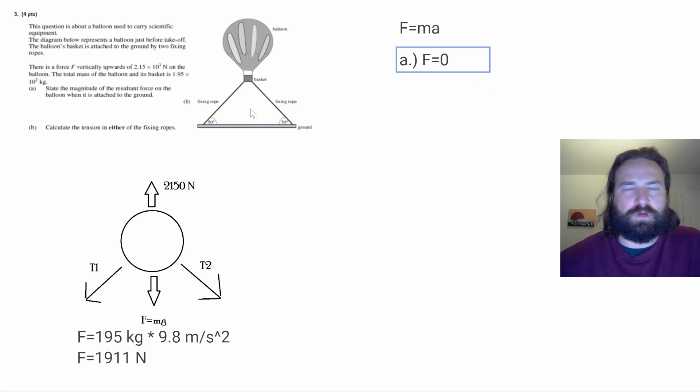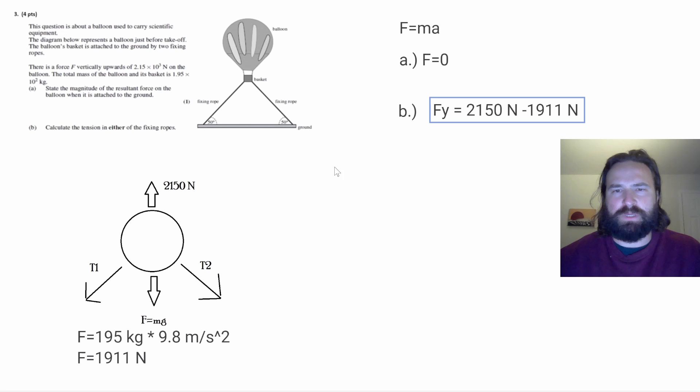There's no force because the object's not in motion. And now we want to figure out what's keeping this thing from moving, which is that tension force on the fixing ropes. So that's part B. So the first thing that I found was the downward force, the total downward force. So I'm going to call that F of Y.